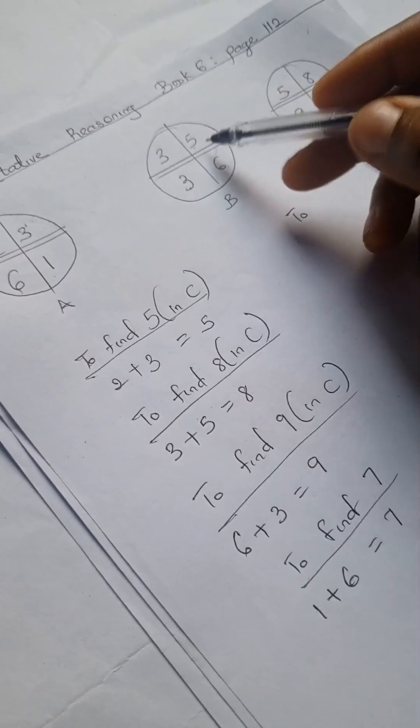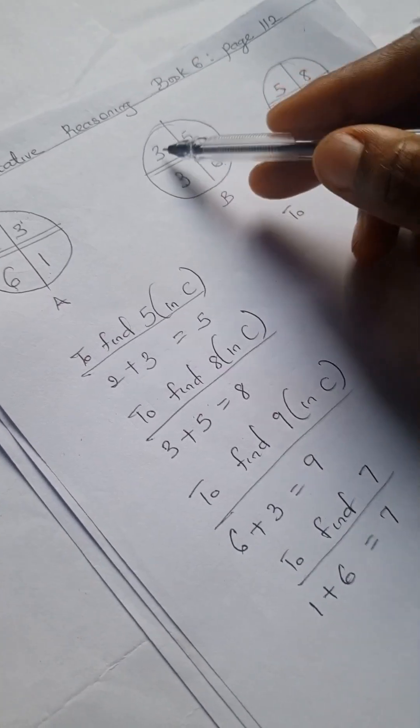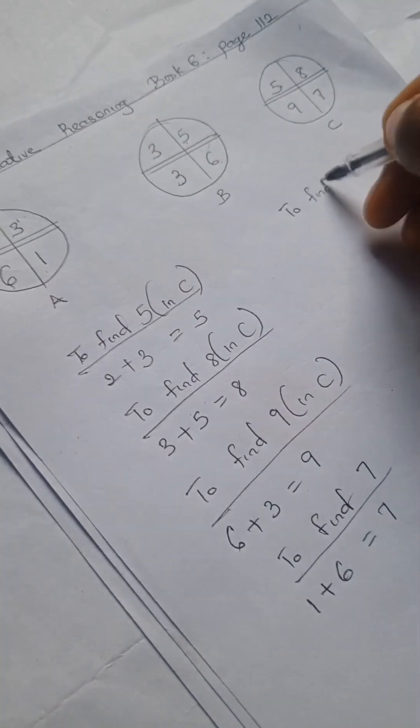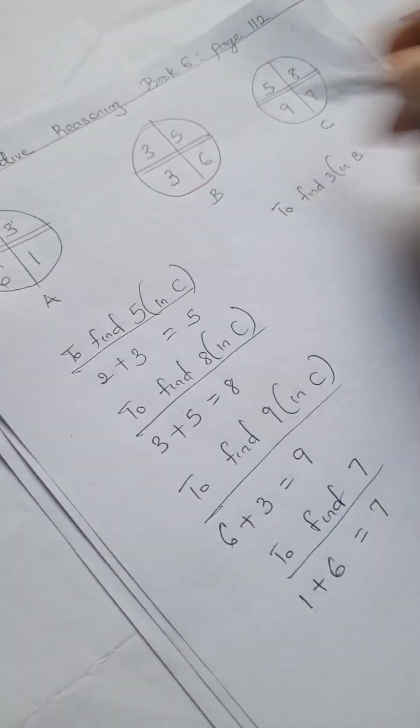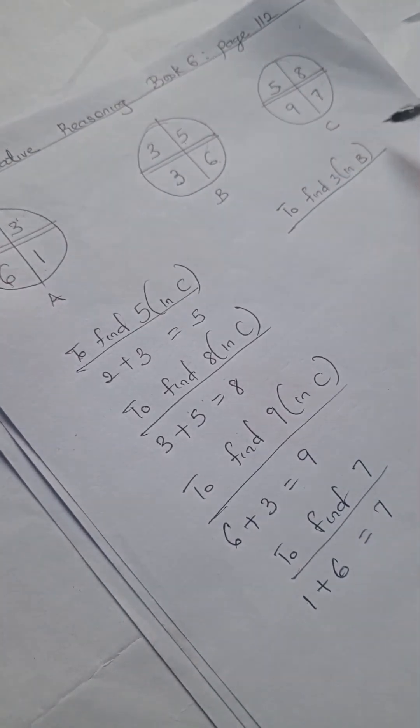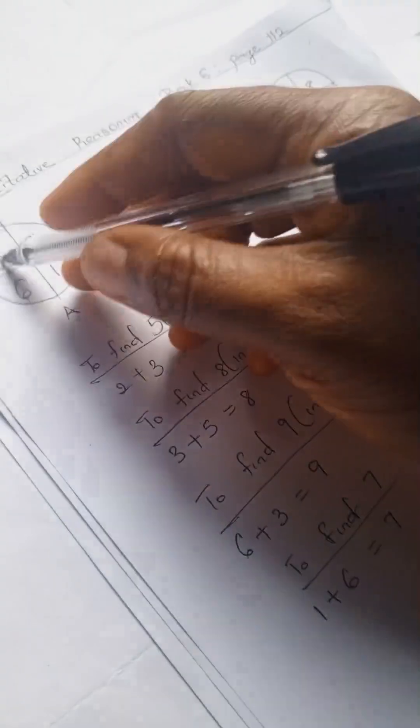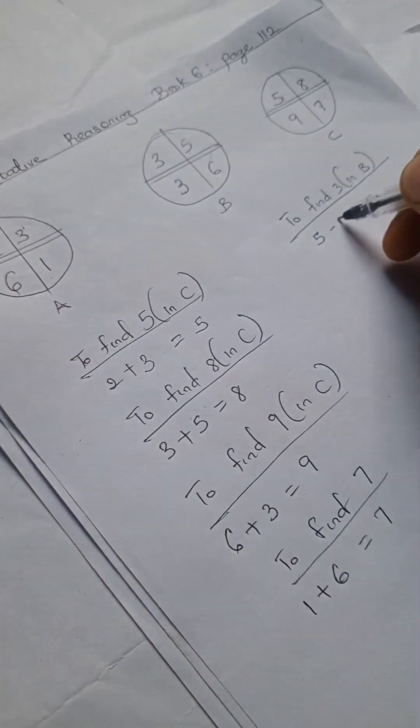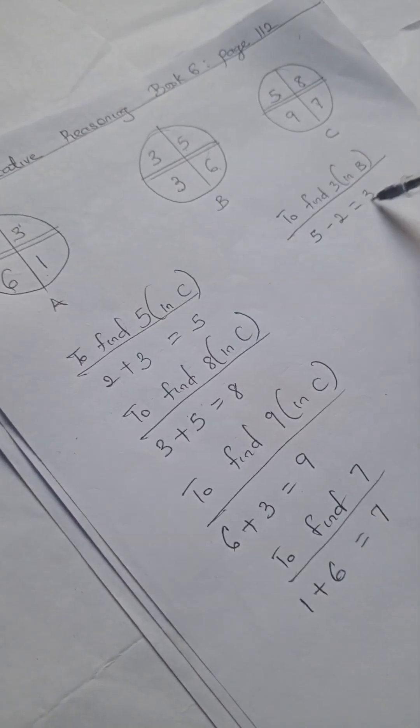To find 3 in B, that's the 3 up, we're going to have 5 minus 2, 5 minus 2, that gives us 3.